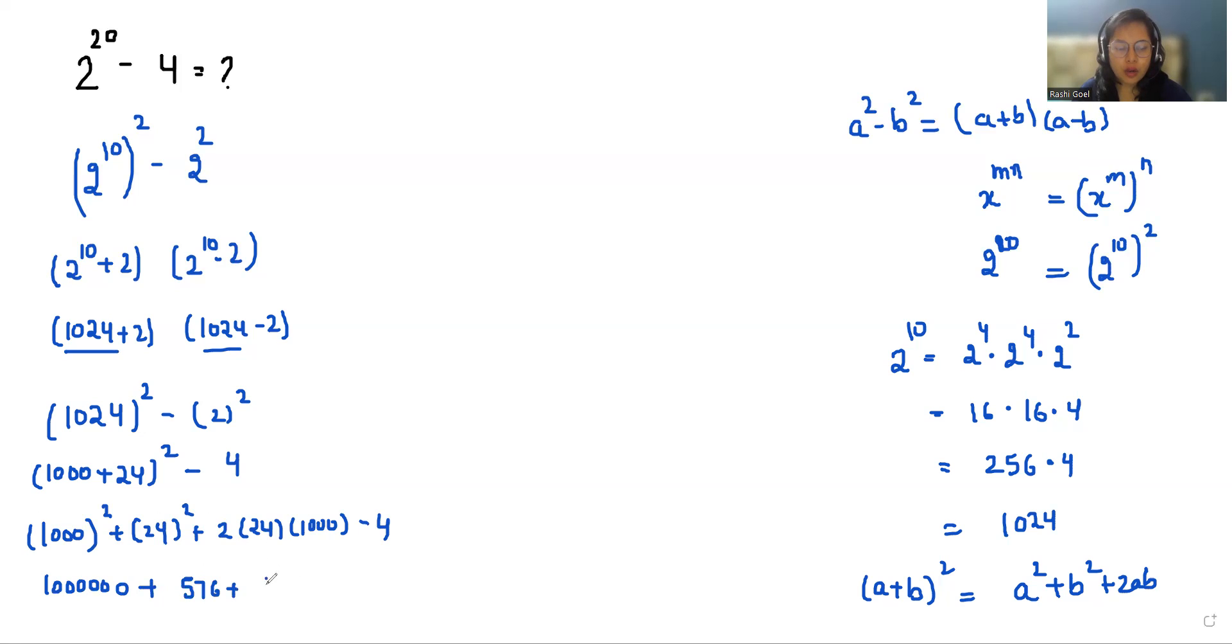So when we add these three terms, 1048576 minus 4 that is 1048572. So our final answer is 1048572. That's how you can solve this type of problem without using a calculator. I hope it's useful and easy to solve.